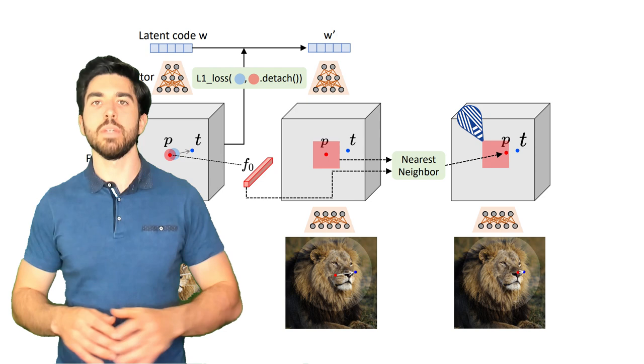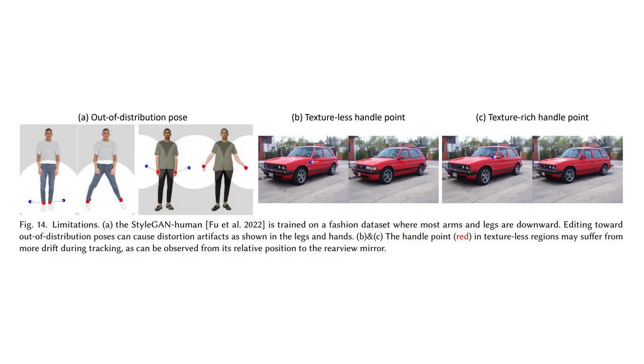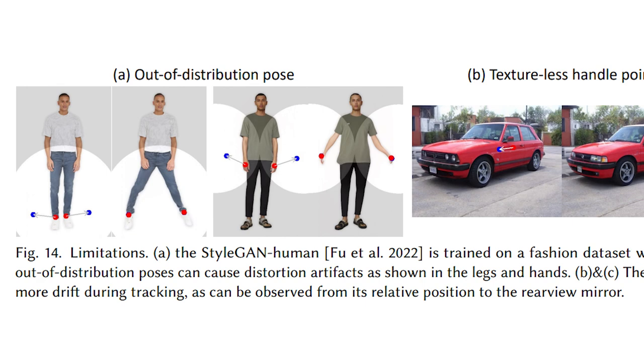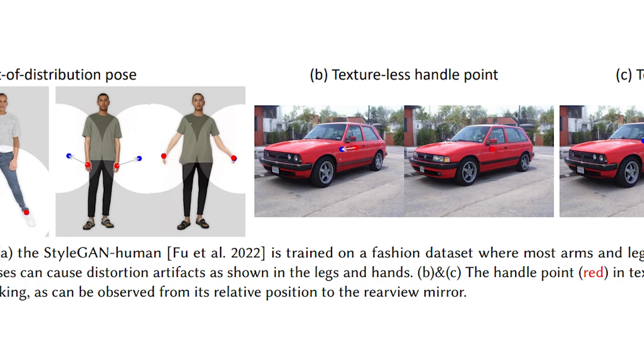There are some limitations, like only being able to edit GAN-generated images since they work in the feature space itself, or at least the data to be modified has to be within the training data in order to maximize the results and not create weird artifacts like those.